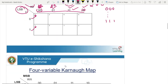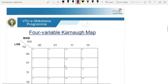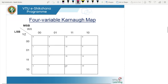Similarly, we will see the 4-variable Karnaugh map. The column and row ordering follows 00, 01, 11, 10 on both sides. In the 4-variable Karnaugh map, 2 to the power of 4 equals 16, so there are 16 cells.